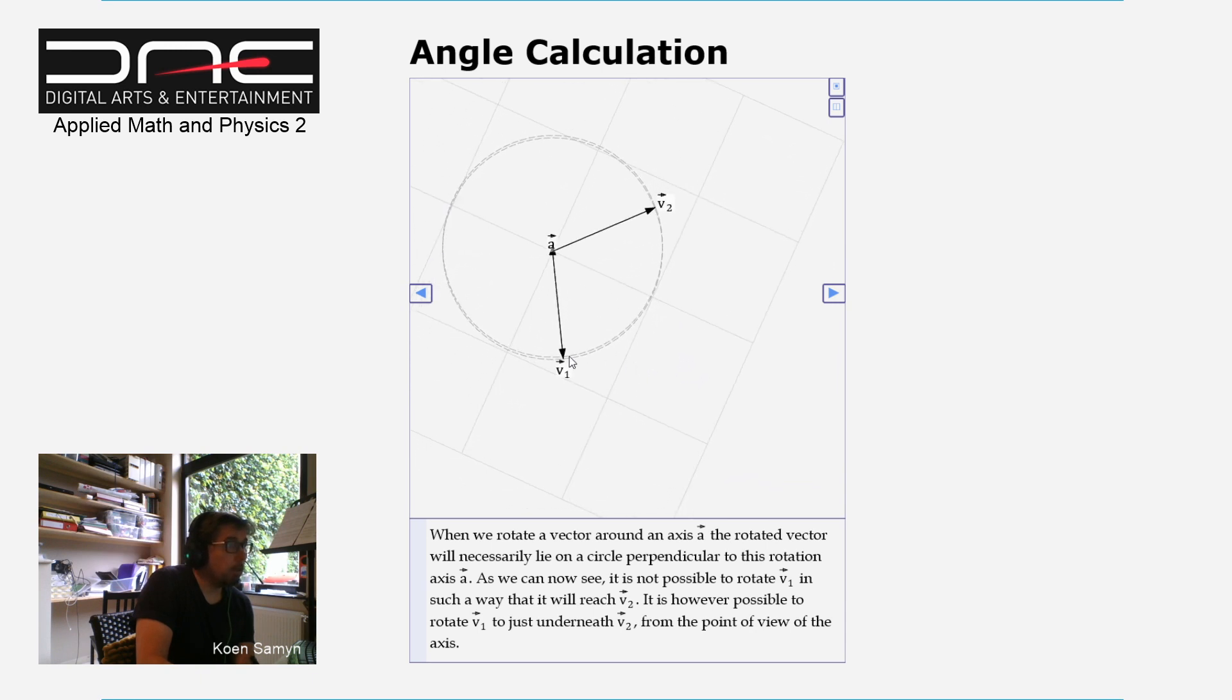And close is defined as: we rotate V1 around A and make it lie underneath or above V2. So from the point of view, or looking directly on A, on axis A, this is actually possible.